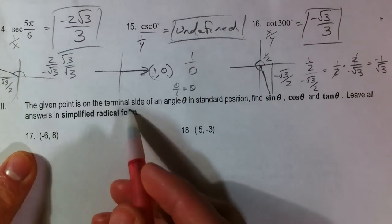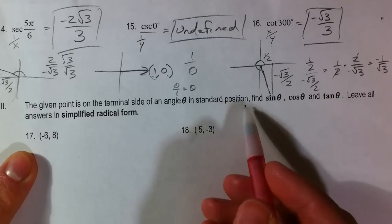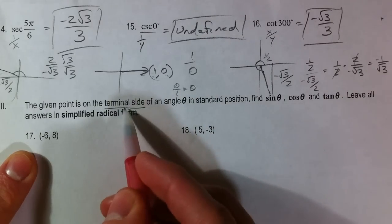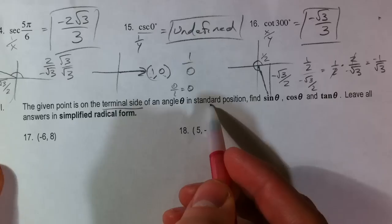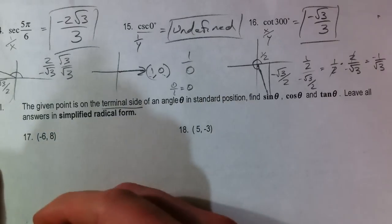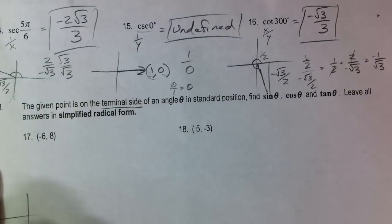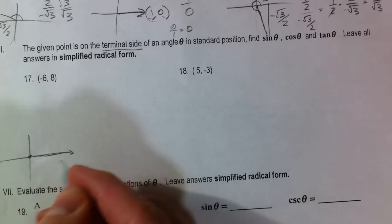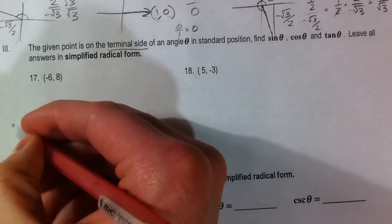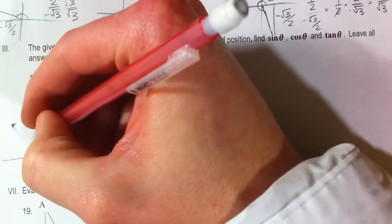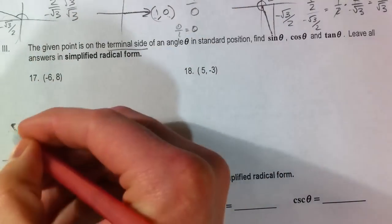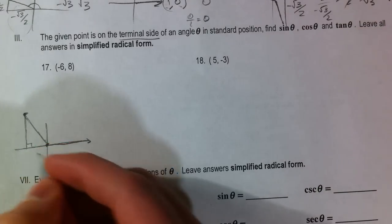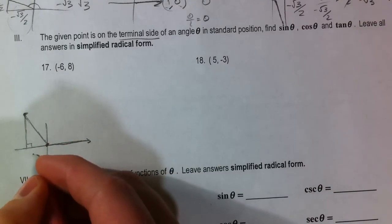So this point is given, is on the terminal side of an angle in standard position. Terminal side meaning where the angle ends. And standard position meaning it started at the positive x-axis and ended at negative 6 comma 8. And so this is our angle that we're talking about. Now they all have this reference angle and you always want to draw your triangle back to the x-axis. Drop it down. It keeps it consistent with your adjacent sides.